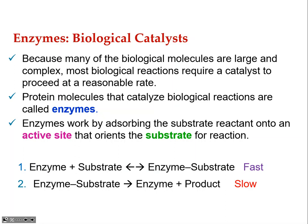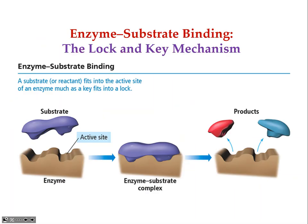Depending on the reaction, enzymes can break down substrates or link two substrates together. Many biological molecules are either being built — like proteins, nucleic acids, and lipids — or broken down into smaller monomers like monosaccharides, amino acids, and nucleotides. Bodies constantly build and replenish different structures like proteins and red blood cells.